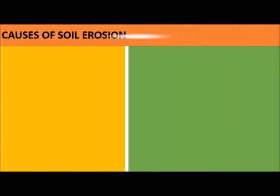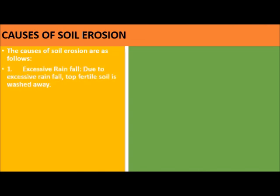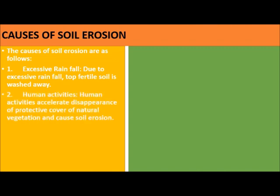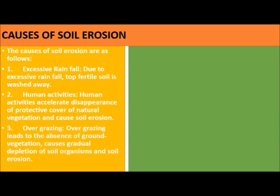Causes of soil erosion are as follows. 1. Excessive rainfall: due to excessive rainfall, top fertile soil is washed away. 2. Human activities: human activities accelerate the disappearance of a protective cover of natural vegetation and cause soil erosion. 3. Overgrazing: overgrazing leads to the absence of ground vegetation, causing gradual depletion of soil organisms and soil erosion.